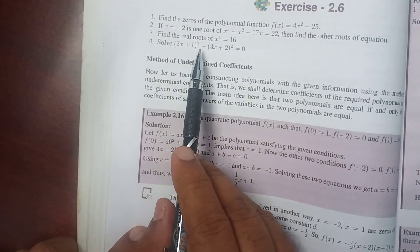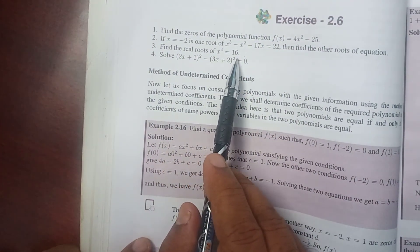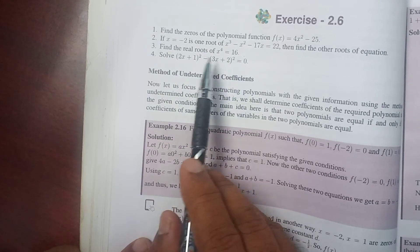Find the real roots of x⁴ = 16, only the real roots.